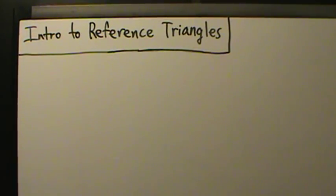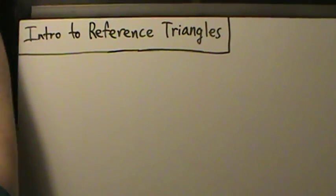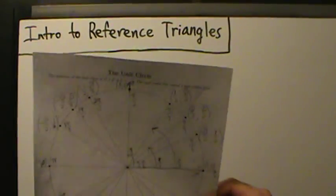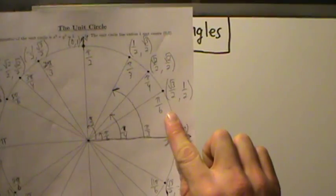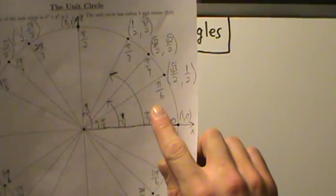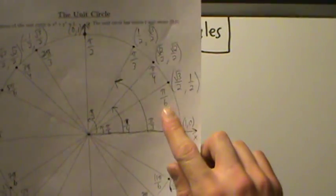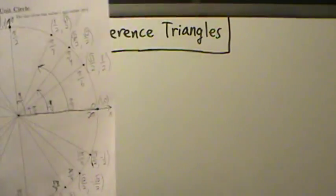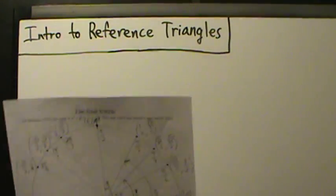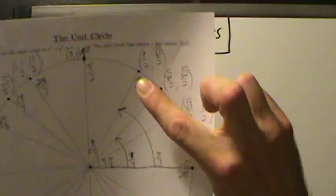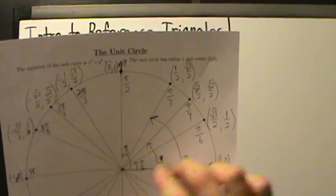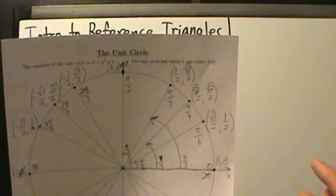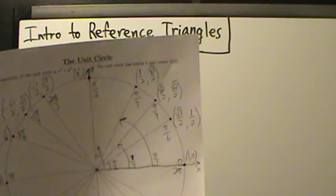We've been talking a lot about doing trig on the unit circle, so we've had these special angles that we looked at. For example, cosine of pi over 6 is the x-coordinate, root 3 over 2; the sine of pi over 6 is the y-coordinate, 1 half, and so on. We know that because these points are on the unit circle — cosine is the x-coordinate, sine is the y-coordinate.